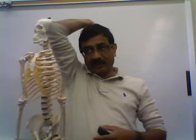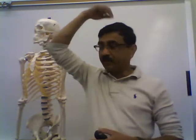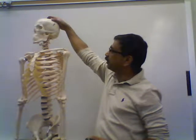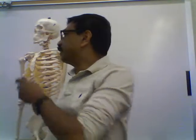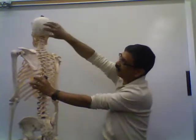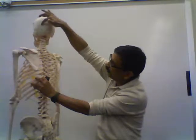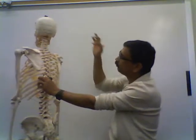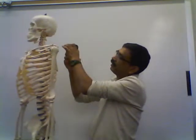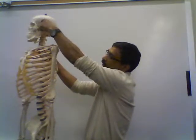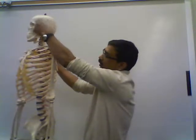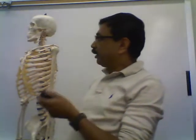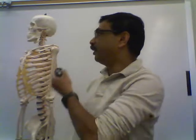The lambdoid suture articulates the parietal bones and the occipital bone. The squamous suture is on the side of the skull and articulates the temporal bone around the ear with the parietal bone. Those are the important sutures that hold the cranial bones strongly together.